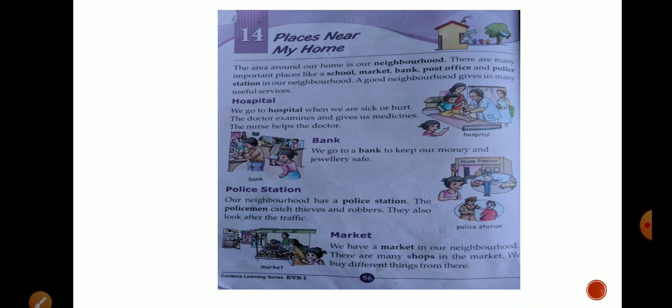Jo bhi area, jo bhi jagah hamare ghar ke aas paas ame dekhne ko milti hai, wo usko ham neighborhood kehte hain, usko ham hamsaigi kehte hain. Matlab jo bhi jagah, jo bhi aas paas ham ghar dekhte hain, buildings dekhte hain, land hai, jo bhi area hai hamare ghar ke aas paas — usko ham apna neighborhood consider karte hain. Usko ham apni hamsaigi kehte hain.